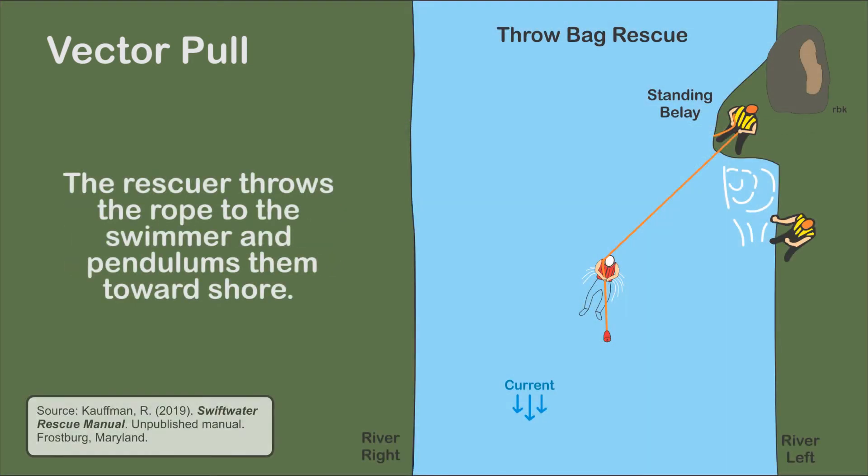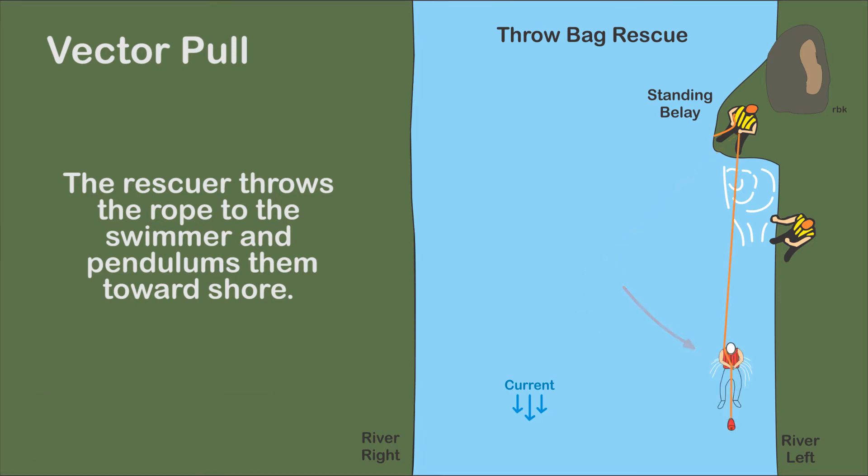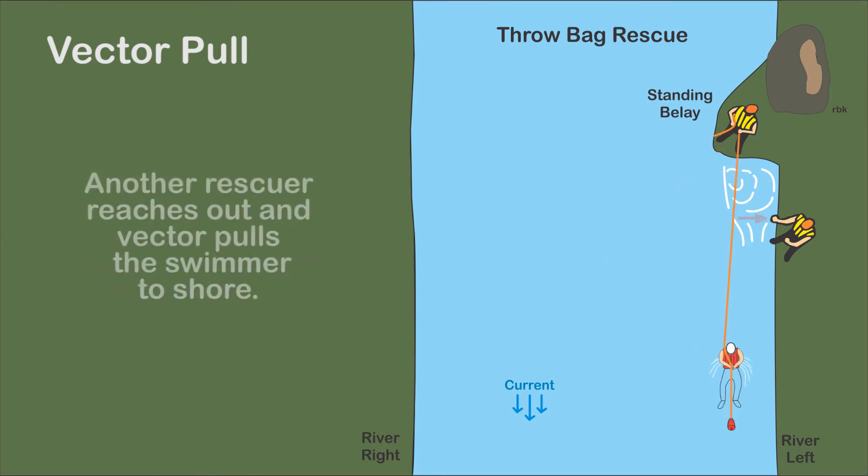Using a swift water rescue example, the rescuer pendulums the victim to the shore. They are not quite there. Another rescuer uses a vector pull and pulls the victim into the eddy.